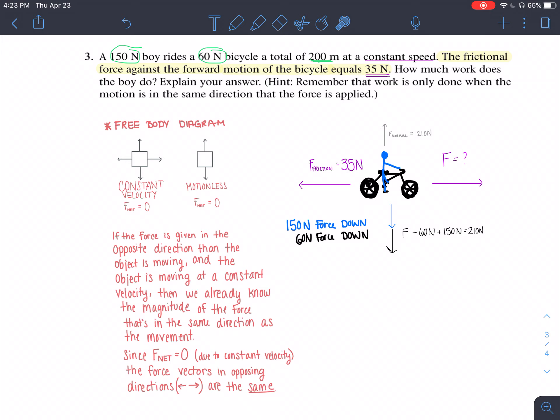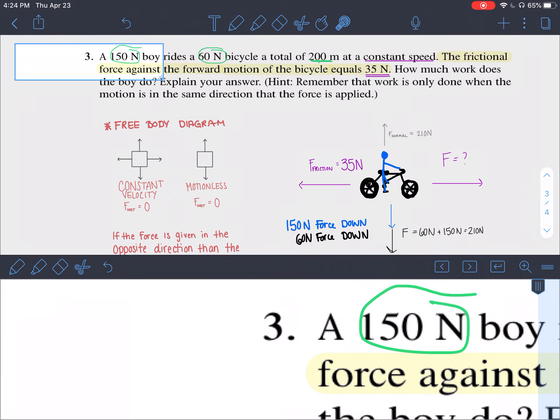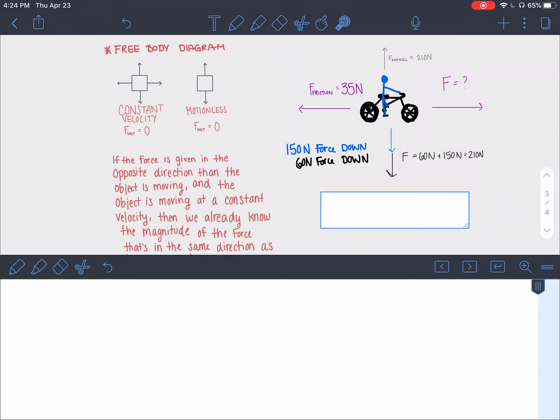Now my arrows might not be perfectly sized up but they should all be equal in length. I was able to figure out the force of him going down based on what they gave me. Then the normal force in the other direction had to have been the same as the 210 newtons because he's not floating in the air or falling through the ground. Therefore the force that we need to calculate work is going to be the same as the friction force because it's again moving at a constant velocity, net force of zero, the forces must be the same. So to calculate work here we will have our 35 newtons times 200 meters.